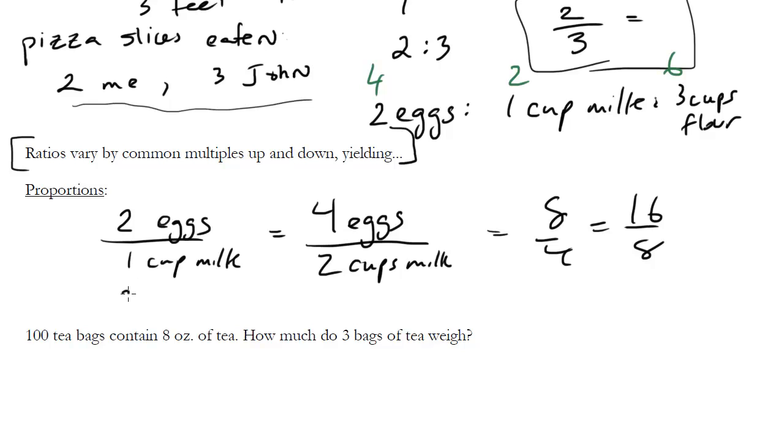I could then set up a proportion. If I have two eggs for every one cup of milk and I have 10 eggs, how many cups of milk do I have? That's a proportion. I could cross multiply, or I could just see it's five by the easy ratio. That's just what a proportion is. It's all about ratios.